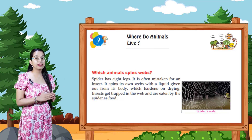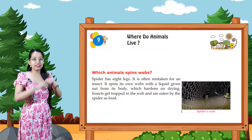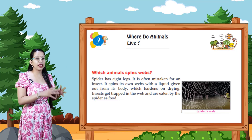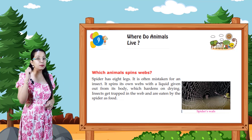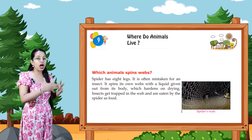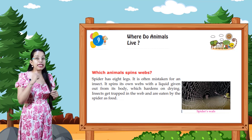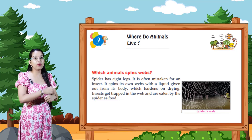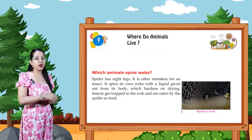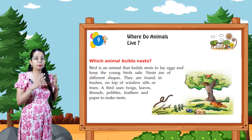Which animal spins webs? Spider has 8 legs — it is often mistaken for an insect. It spins its own webs with a liquid given out from its body, which hardens on drying. Insects get trapped in the web and are eaten by spiders as food. Look at the picture of a spider's web.